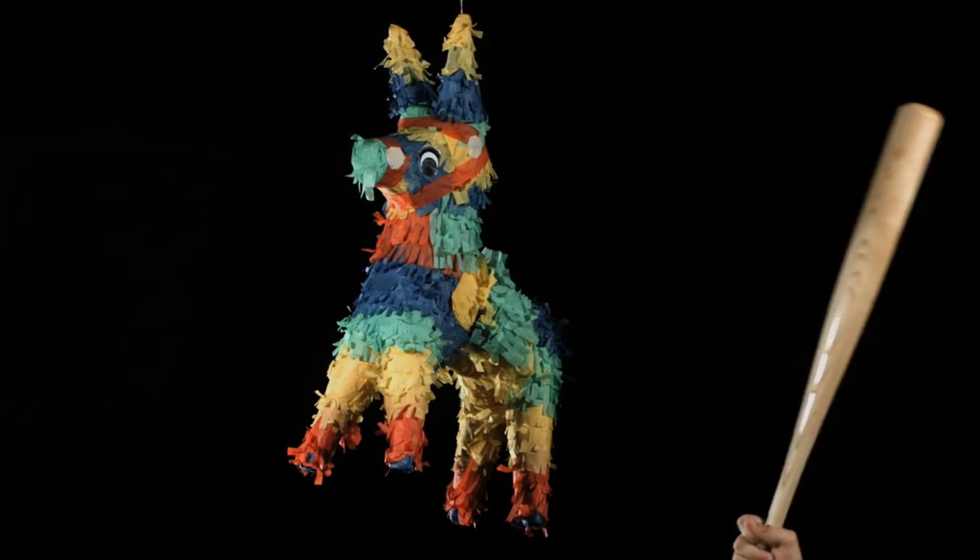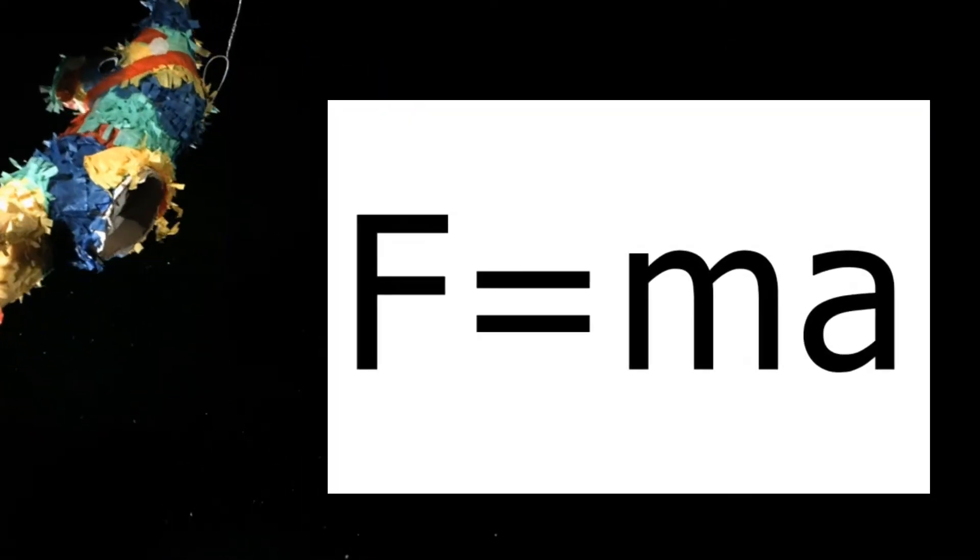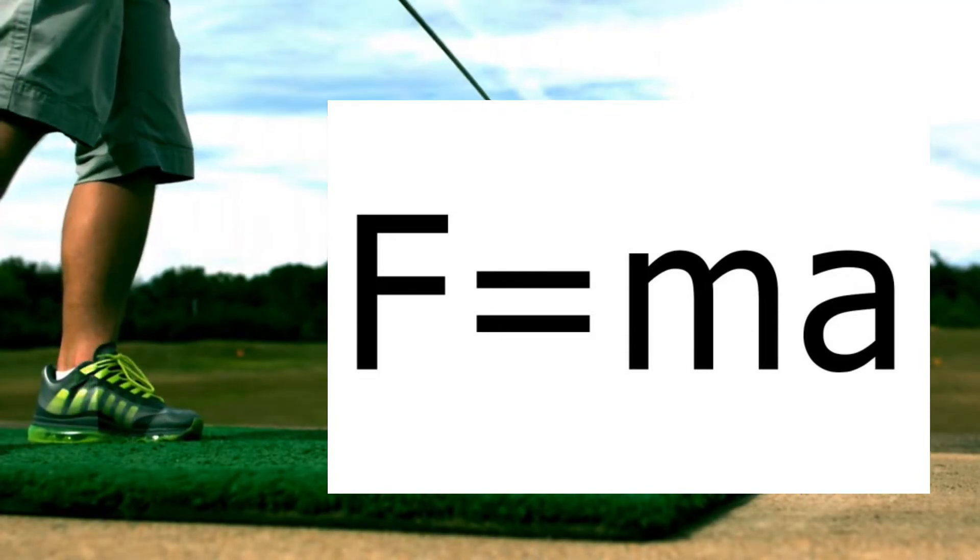The second law of motion describes what happens to a massive body when it is acted upon by an external force. It states, the force acting on an object is equal to the mass of that object times its acceleration. This is written in mathematical form as F equals MA, where F is force, M is mass, and A is acceleration.